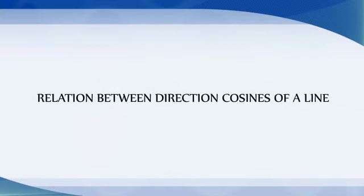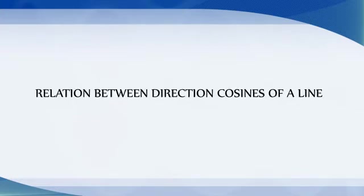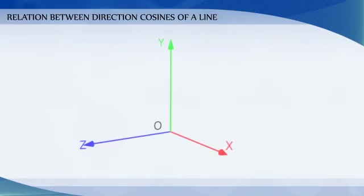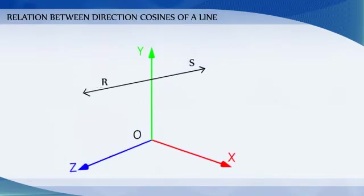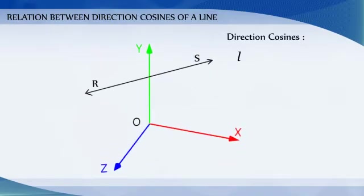Relation between the direction cosines of a line. Consider a line RS with direction cosines L, M and N.